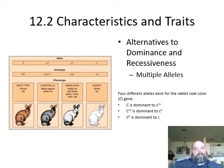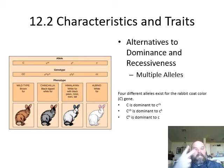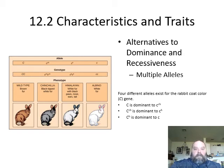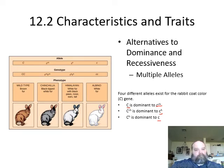Another exception to the rule: what if there's more than two alleles? Mendel lucked out — his genes were all two alleles. What if there's more? A great example is fur color in rabbits. The gene C controls fur color, and there are four different alleles: C, C^CH, C^H, and lowercase c.